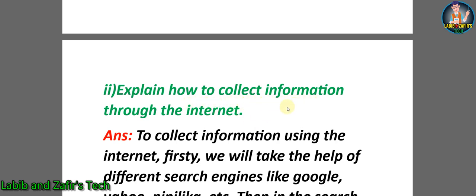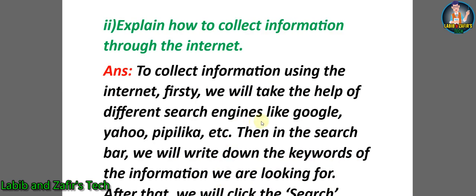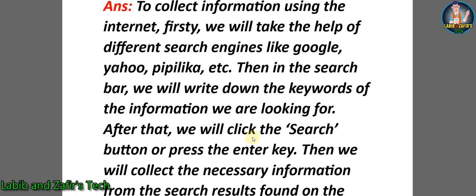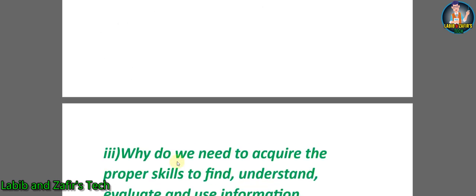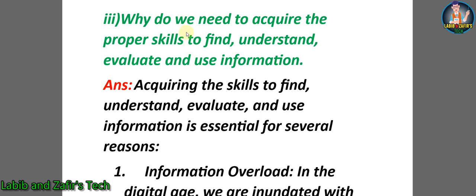Next broad question: explain how to collect information through the internet. Answer: to collect information using the internet, firstly we will take the help of different search engines like Google, Yahoo, and Pipilika. Then in the search bar we will write down the keywords of the information we are looking for. After that, we will click the search button or press the Enter key, then collect the necessary information from the search results found on the internet.